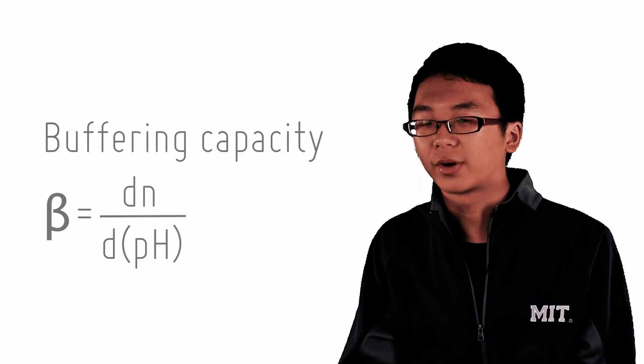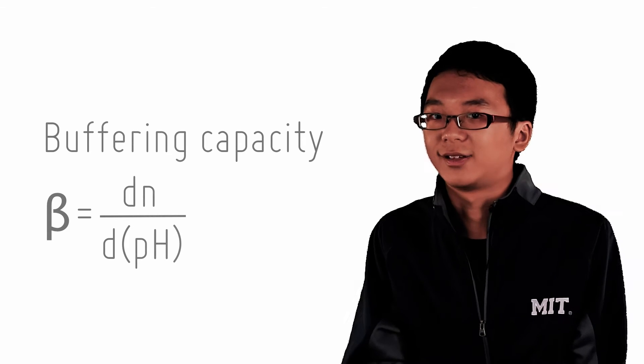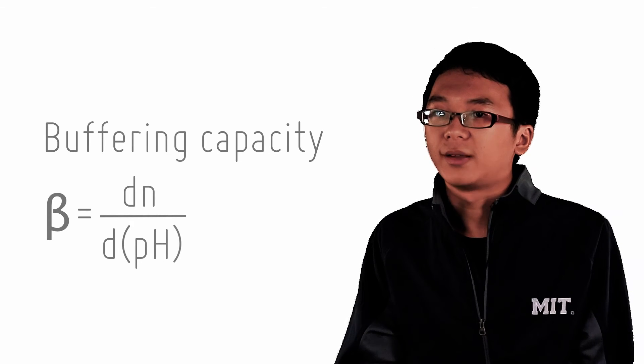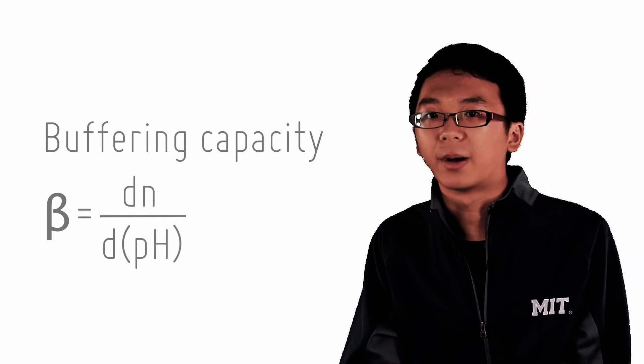Now, obviously the amount of buffering a buffer can handle is related to the concentration of acid and base and its conjugate acid or base. How much can this sponge for straight acid or base absorb before it stops becoming a buffer?